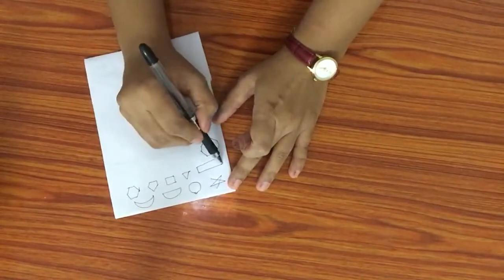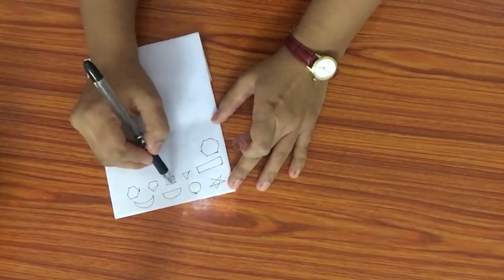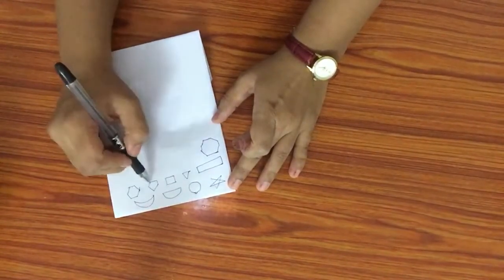Triangle, rectangle four sides, octagon, square, pentagon.